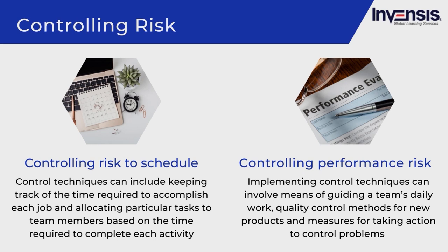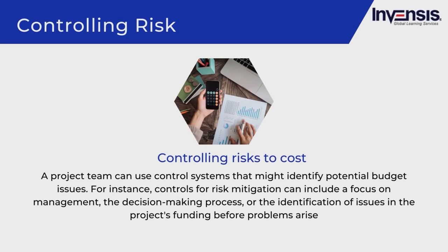Controlling performance risk might involve means of guiding a team's daily work, quality control methods for new products, and measures for taking action to control problems that could influence overall performance. Controlling risks to cost involves using control systems that identify potential budget issues — such as focusing on management decision-making or identifying funding issues before they arise — so the team can detect overspending in advance and take actions to limit it.